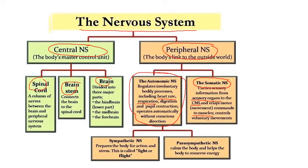The autonomic nervous system is divided into two parts: the sympathetic nervous system and the parasympathetic nervous system. The sympathetic nervous system is often called the fight-or-flight nervous system, while the parasympathetic tends to be acting when we are calming the body — when the body is more relaxed and able to carry out more of its normal functions.